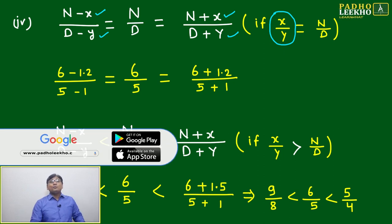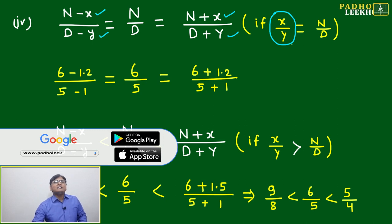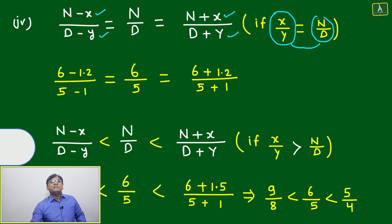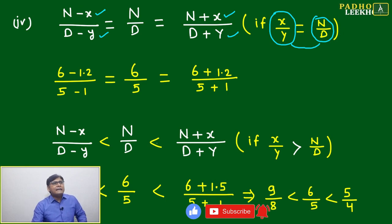Now suppose if x/y is equal to n/d, then if you are adding and subtracting in this fashion, ratio will be the same. What is the meaning here? Meaning is simple. Like here, six—you are making 1.2 extra. Five—you are making one extra.